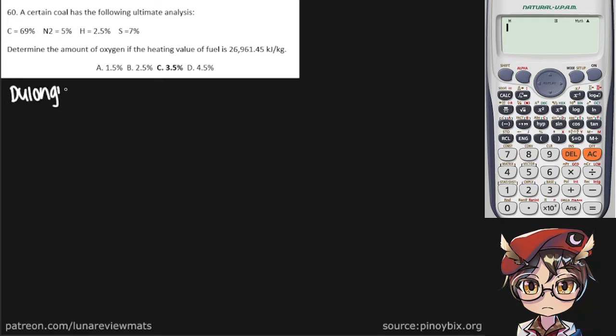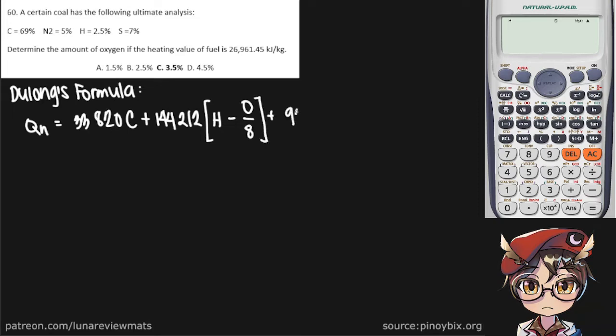Dulong's formula is equal to the heating value, or QH, is equal to 33,820 times the percentile weight of carbon plus 144,212 quantity, percentile weight of hydrogen minus percentile weight of oxygen divided by 8, plus 9,304 times the percentile weight of sulfur.